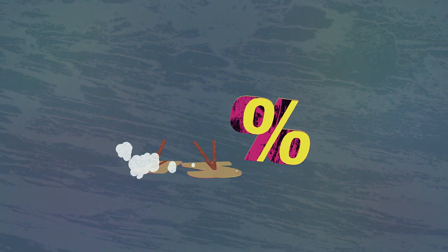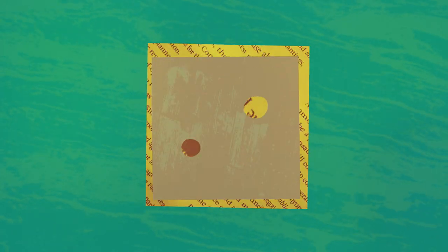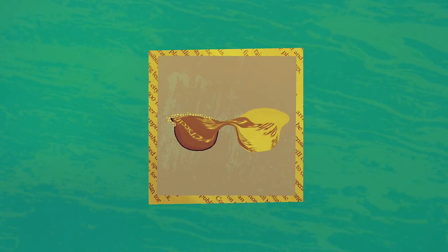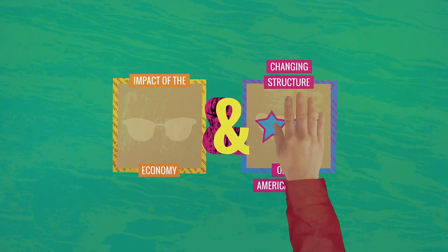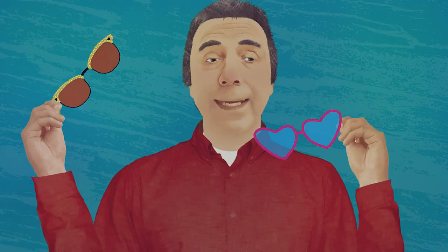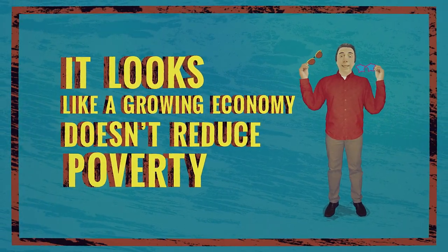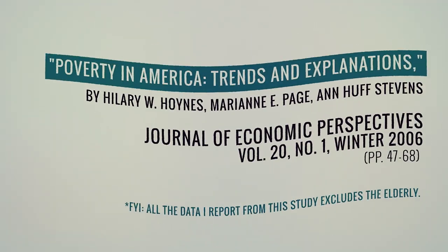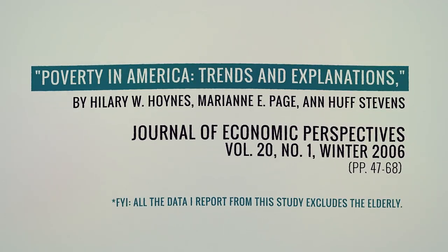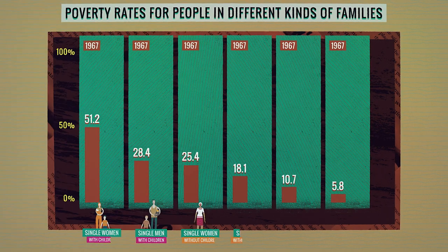12% growth is a pretty appalling result when the overall economy grew so much faster. But that number combines at least two things: the impact of the economy on the middle class and the changing structure of the American family. The same thing happens with poverty. It looks like a growing economy doesn't reduce poverty, but it's complicated. A study of poverty between 1967 and 2003 shows just how hard it is to disentangle the impact of the economy from changes in the family.